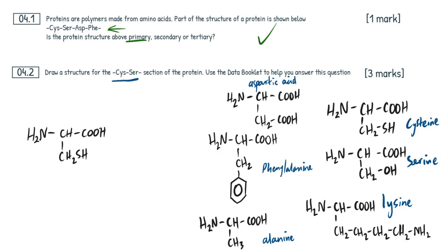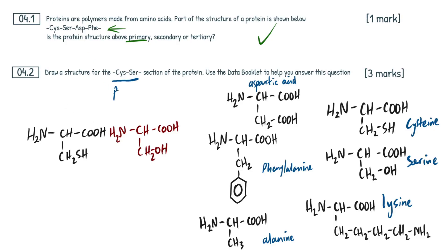I'm drawing it this way on purpose to demonstrate what you need to do. So this is our cysteine. Now I'll draw out serine: H2N, CH, COOH, CH2OH. These are our two amino acids. All we need to do is bond them together and show the trailing bonds — that's all we need to do for three marks. The bond that forms between two amino acids is called a peptide bond, also known as an amide bond — exactly the same thing.